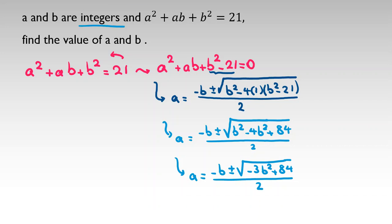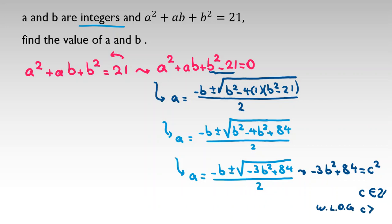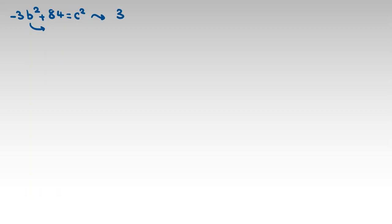Since a and b are integers, this expression must yield an integer. So the quantity inside the square root, negative 3b squared plus 84, must be a perfect square — call it c squared, where c is a non-negative integer. Rewriting: negative 3b squared plus 84 equals c squared, which gives us 3b squared plus c squared equals 84.